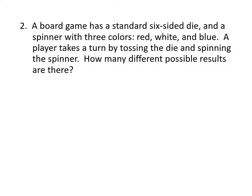Now, another problem. We've got a six-sided die and a spinner with three colors. In this game, we're taking a turn by tossing the die and spinning the spinner. So we've got two separate things going on. This time it might make sense to represent this as a table.